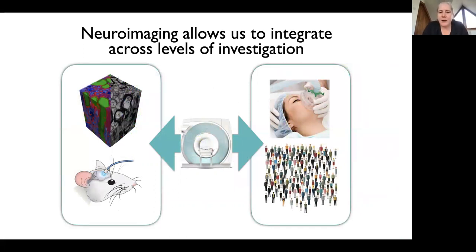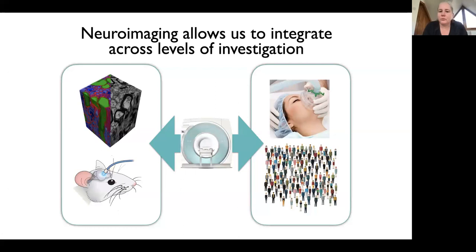I actually take issue with that view. I prefer a different way of looking at it. One of the things that is really powerful about MRI and neuroimaging more generally is that it allows us to integrate across levels of investigation. We can take basically exactly the same tool — scan small segments of tissue, use it in rodents with causal experimental manipulations, do it in patients, and at the level of populations. It's really hard to find another tool that enables all of these different uses.